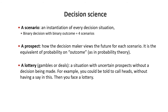What's very important in decision science is that we start by making some proper definitions. In decision science we have what's called a scenario, or an instantiation of every decision situation. For example, suppose you're asked to flip a coin and call the flip — you have a decision to make between heads or tails, and then you will have a binary outcome which is heads or tails, so essentially we have four scenarios.